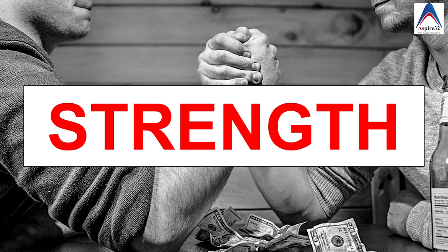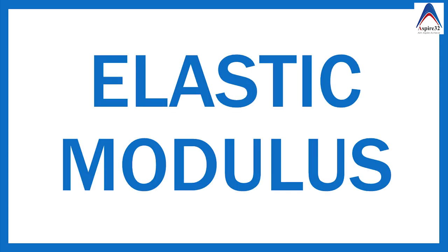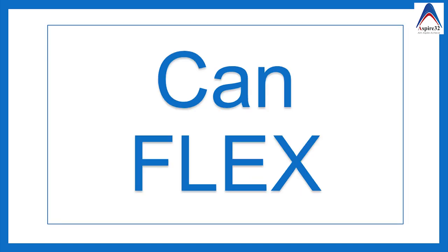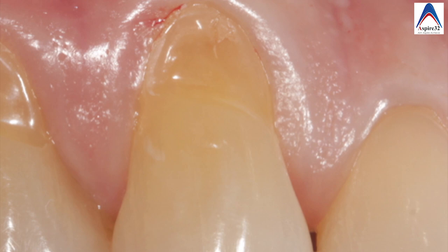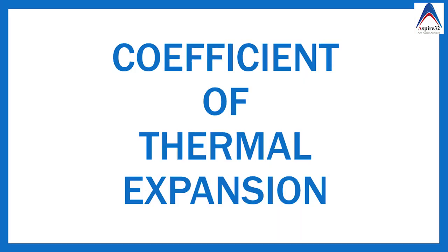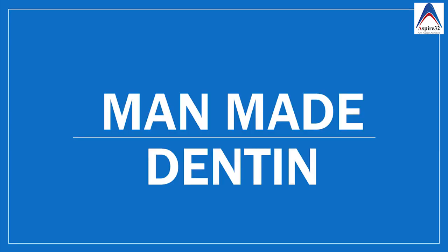The strength of glass ionomer cement is greater than both zinc phosphate and zinc polycarboxylate in compressive and tensile strength. However, the elastic modulus is notably low, indicating it is less brittle and can flex better. Because of this lower elastic modulus and its chemical bond, it is considered the best material for restoring Class 5 caries or cervical abrasions. The coefficient of thermal expansion of glass ionomer cement is as close as possible to tooth structure — approximately 11 compared to dentine's 8 to 9. This matching of resiliency and coefficient of thermal expansion is why it is called manmade dentine.